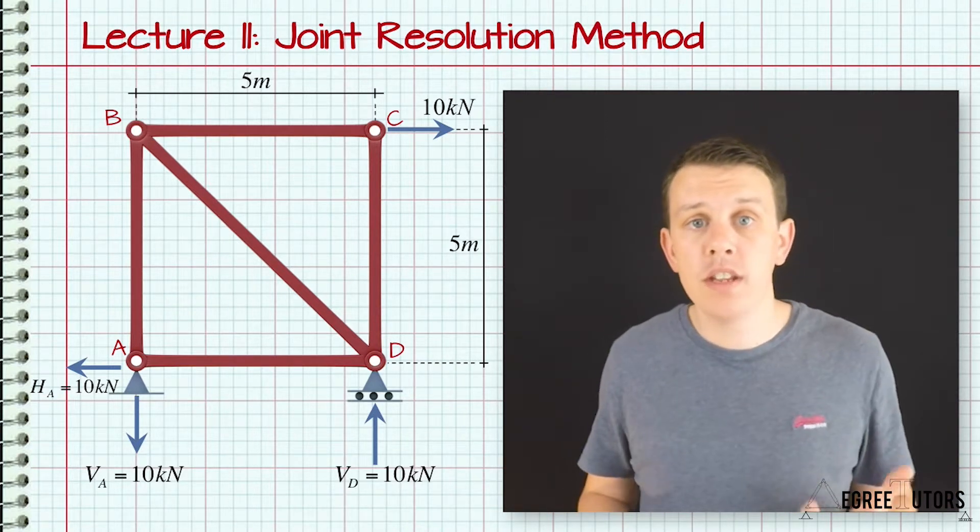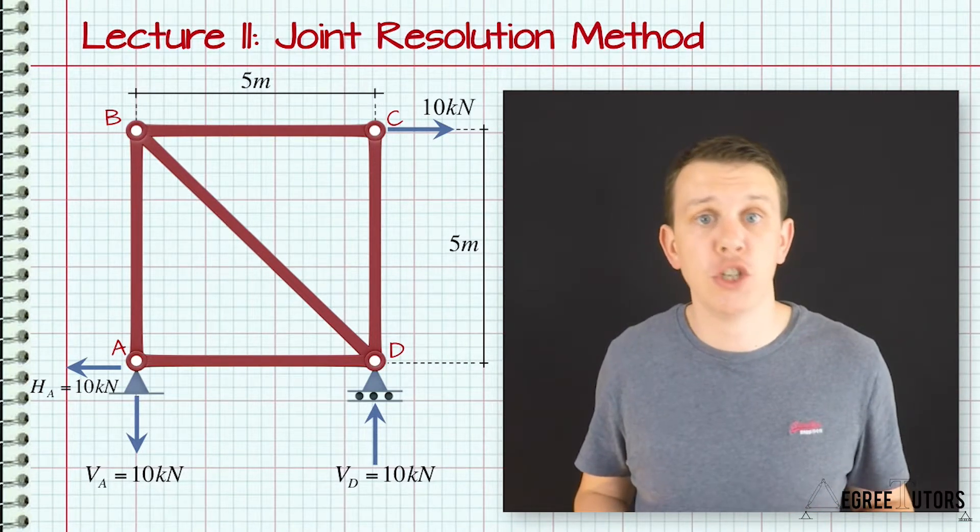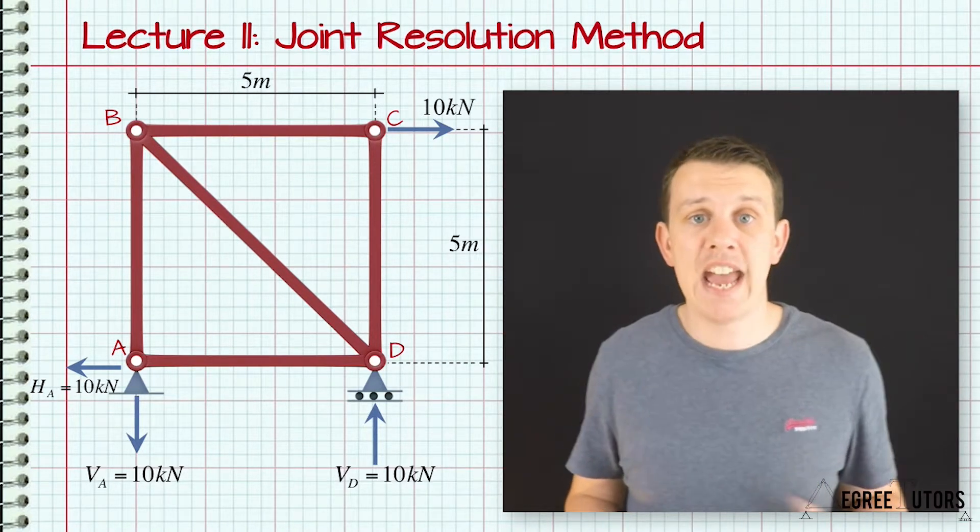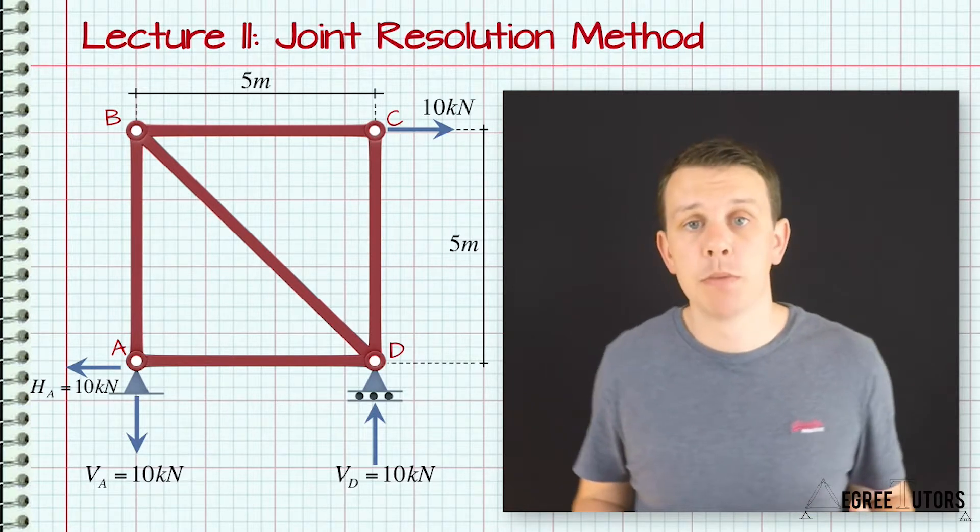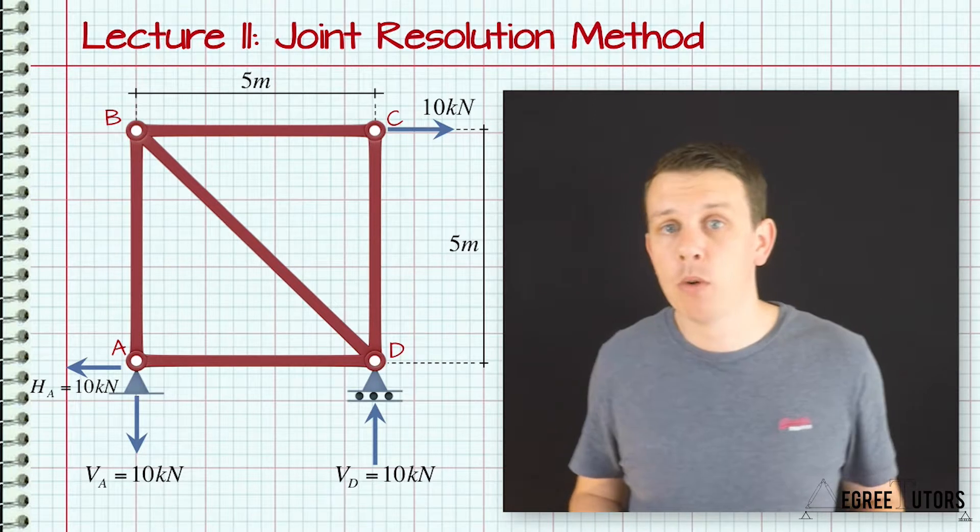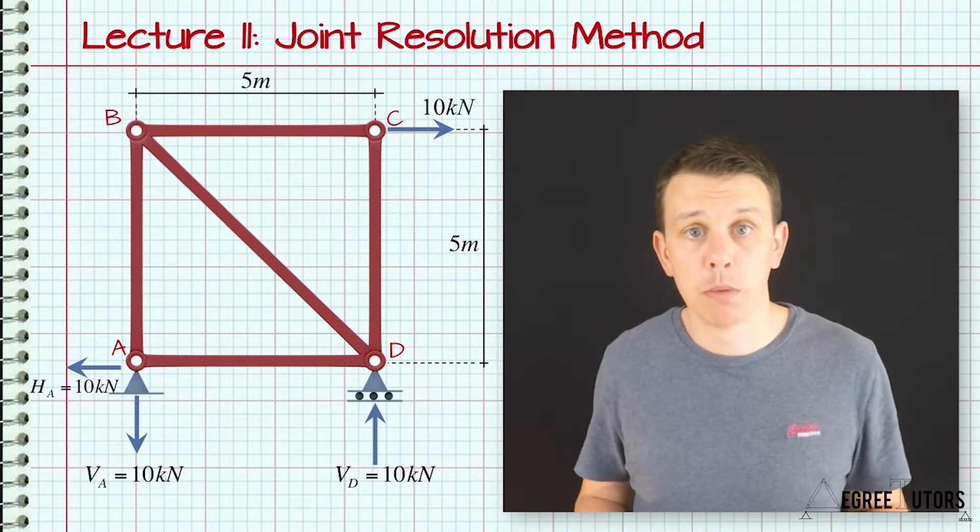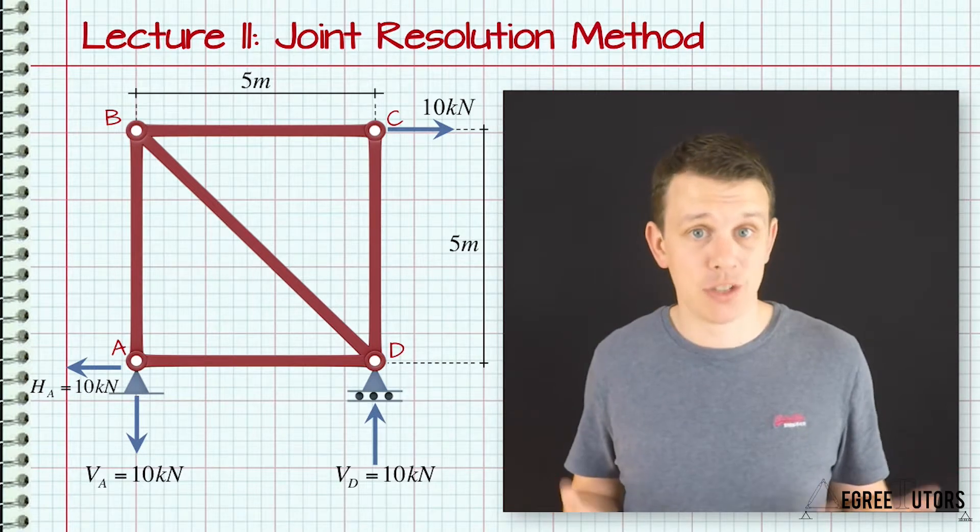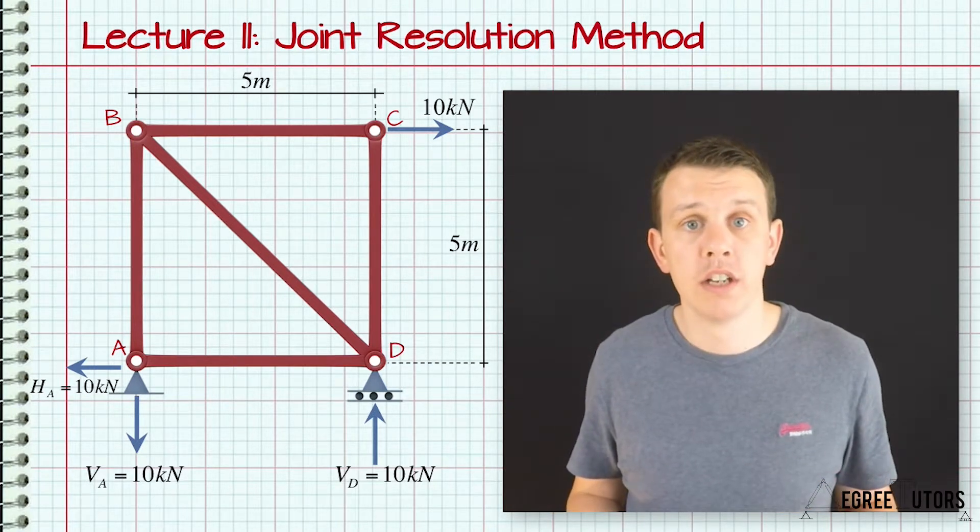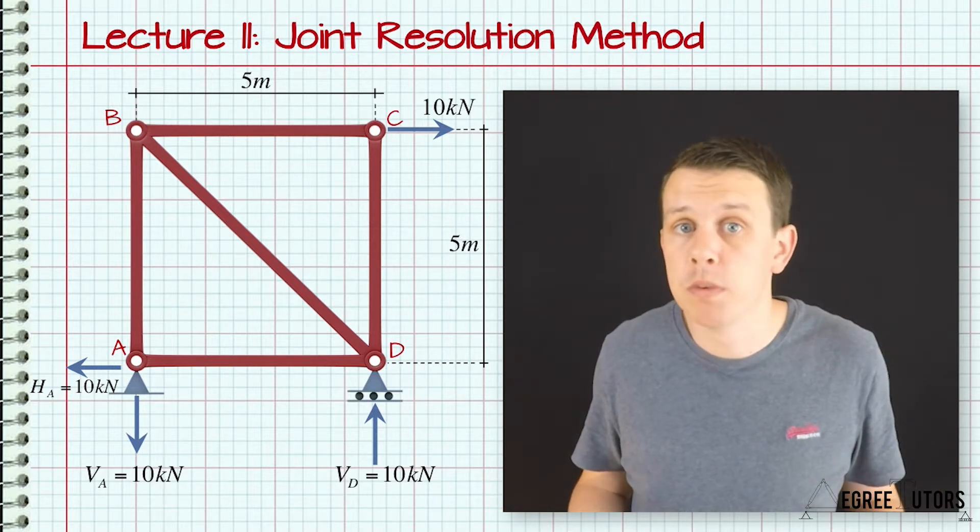Now the important thing to note here is, for each joint we only have two equations of equilibrium that we can use. Sum of the forces in the X or horizontal direction and sum of the forces in the Y or vertical direction. Our moment equilibrium equation is no help to us here, because all of the forces that we're considering when we're looking at this joint all pass through the joint and so they're all concurrent. And basically, if there are no lever arms to consider, then there's no moments to consider.